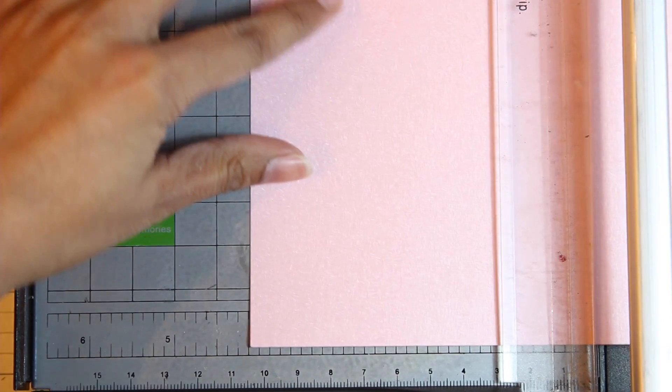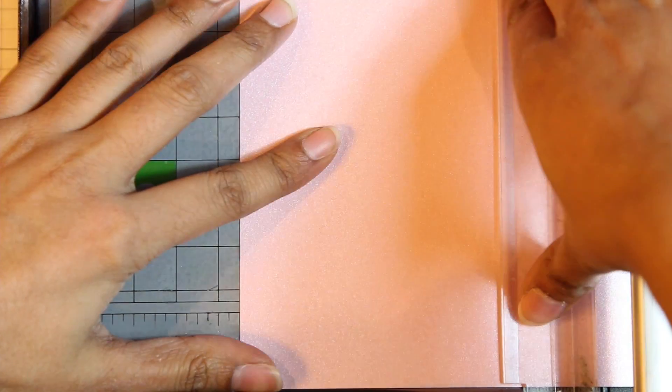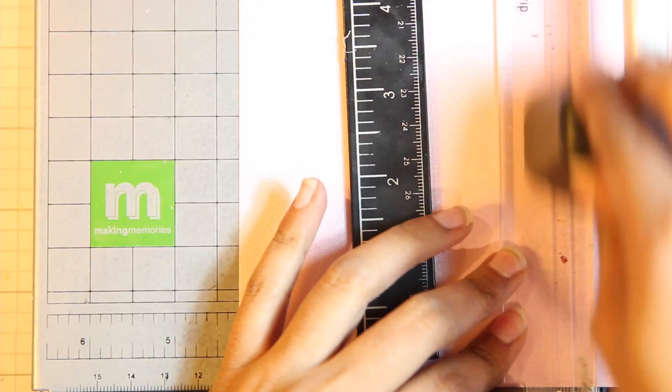First thing to do is prepare the card base. This is Pink Shimmer cardstock from Paper Tray Ink, and I'm just preparing an A2 card base by making a cut at 4 1⁄4 inches with my paper trimmer.